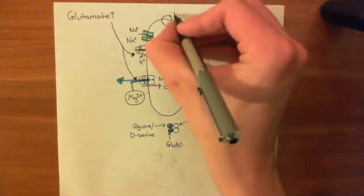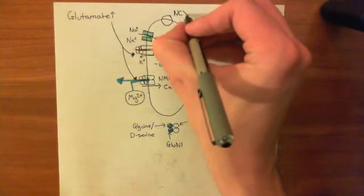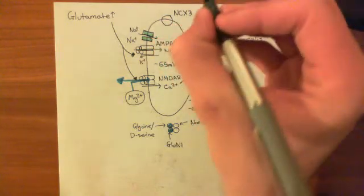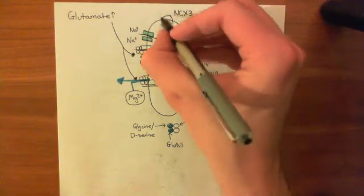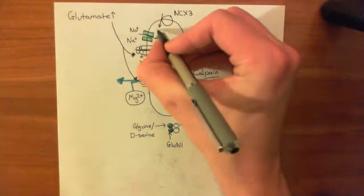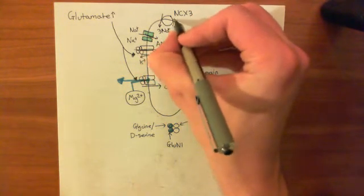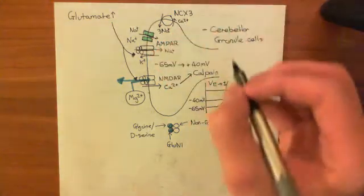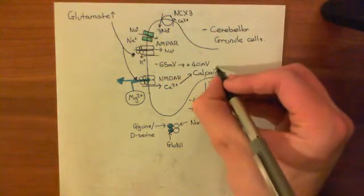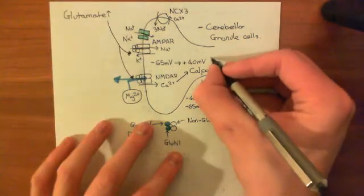And basically, what calpain does is it destroys the sodium-calcium exchangers, and it's specifically been identified to destroy the sodium-calcium exchanger 3. So remember, the sodium-calcium exchangers bring three sodiums in in exchange for the removal, the extrusion of a single calcium.